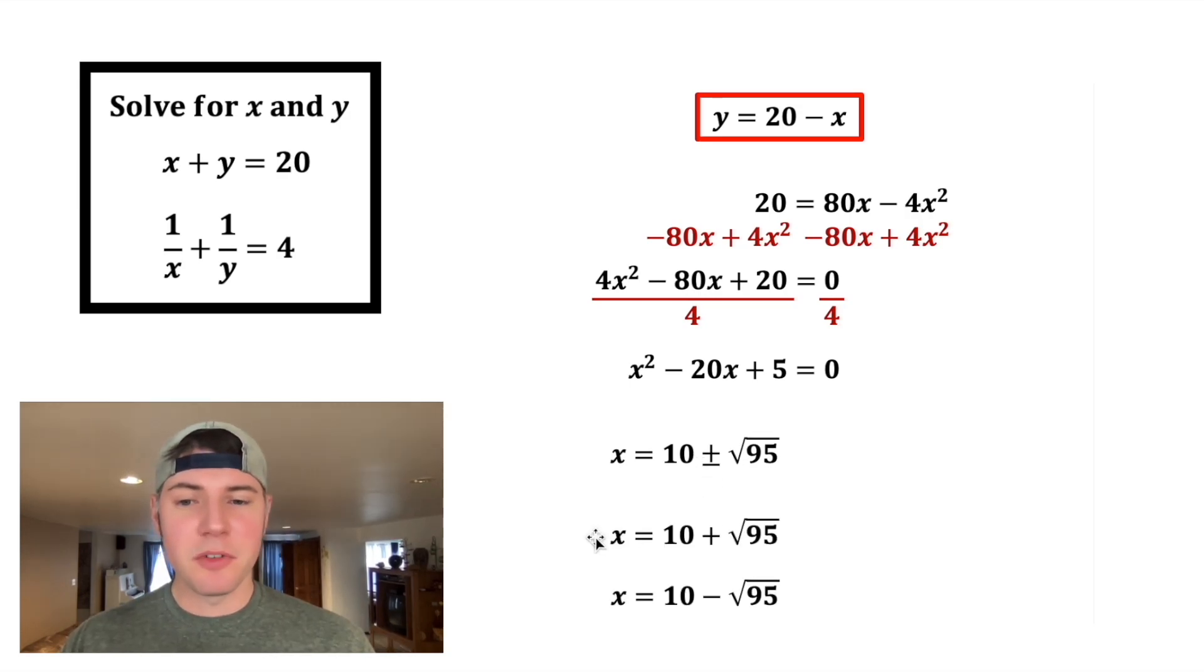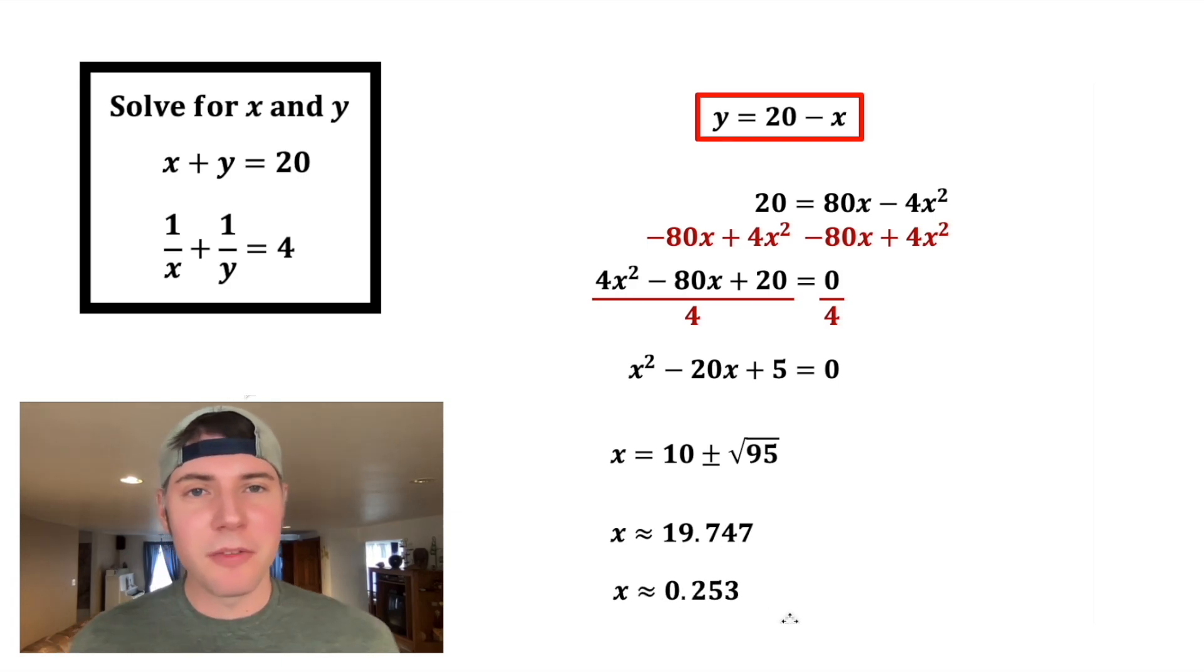So because of this plus or minus, we have two possible values of x, one with the plus and one with the minus. 10 plus square root of 95 is approximately equal to 19.747, and 10 minus square root of 95 is approximately 0.253.